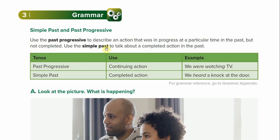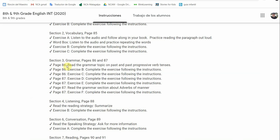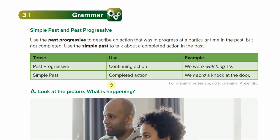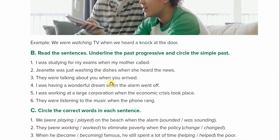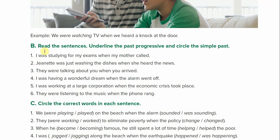That's the grammar lesson for this section. Google Classroom says: exercise B, C, D, E — read the other grammar section — and F, complete everything following the instructions. Let's go to B. B says: read the sentence, underline the past progressive, and circle the simple past.